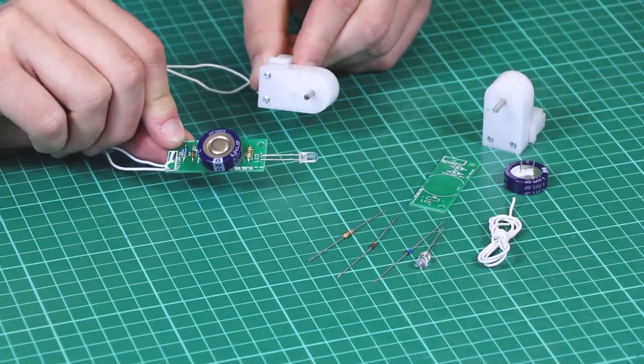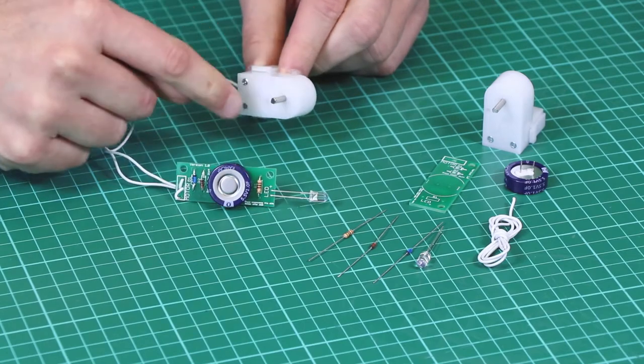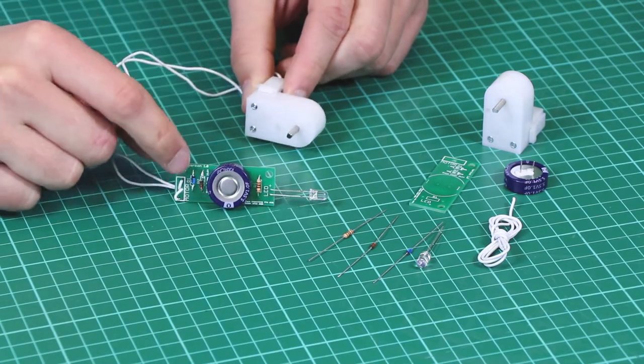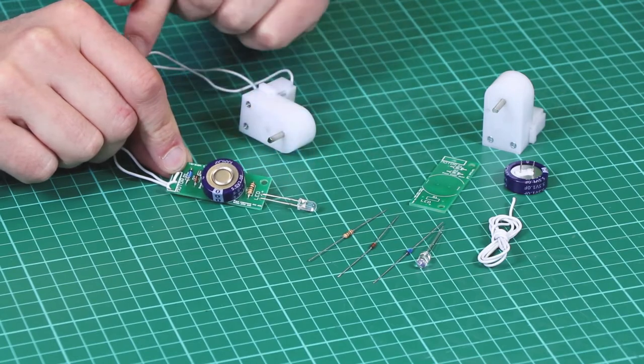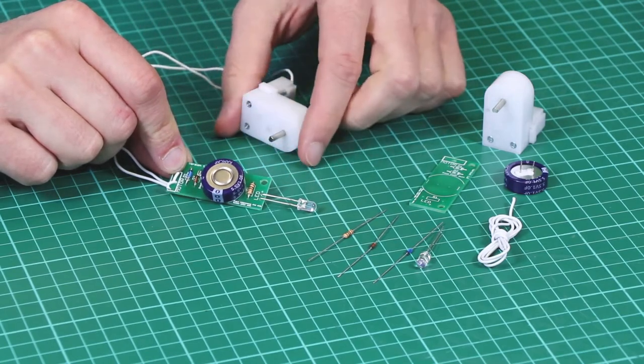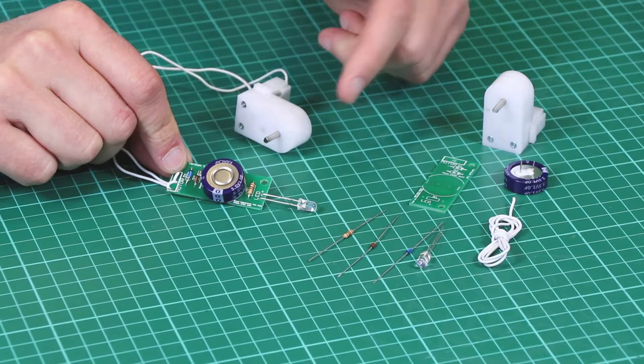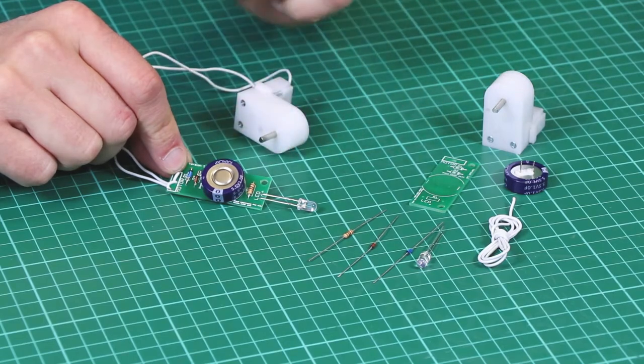Once assembled, the kit will look like this. So as this motor winds, it generates electricity. This charges this capacitor up, and when there's enough charge, it powers the LED. This can stay on when you stop winding, providing you've provided enough charge into the capacitor.